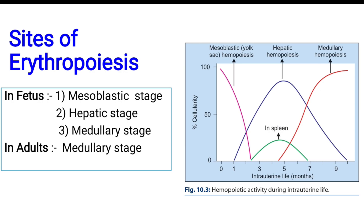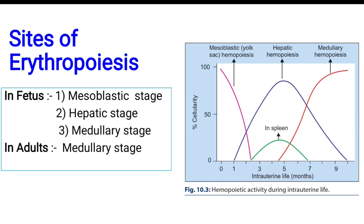You can also see this from the graph — it's called the mesoblastic stage. As the fetus grows, the liver within the fetus also grows and takes the function of the yolk sac, starting to form erythrocytes at the fifth week of gestation. You can also observe from the figure that the spleen is also involved in erythropoiesis, mainly in the second trimester of gestation.